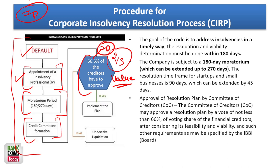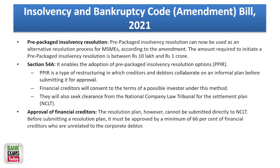The moratorium period in CIRP is 180 days, which can be extended by another 90 days. For startups and small businesses, the resolution time frame is 90 days, which can be extended by 45 days — that is a separate case. Generally for CIRP it is 180 days extendable by 90 days, and two-thirds of the creditors take the final decision.